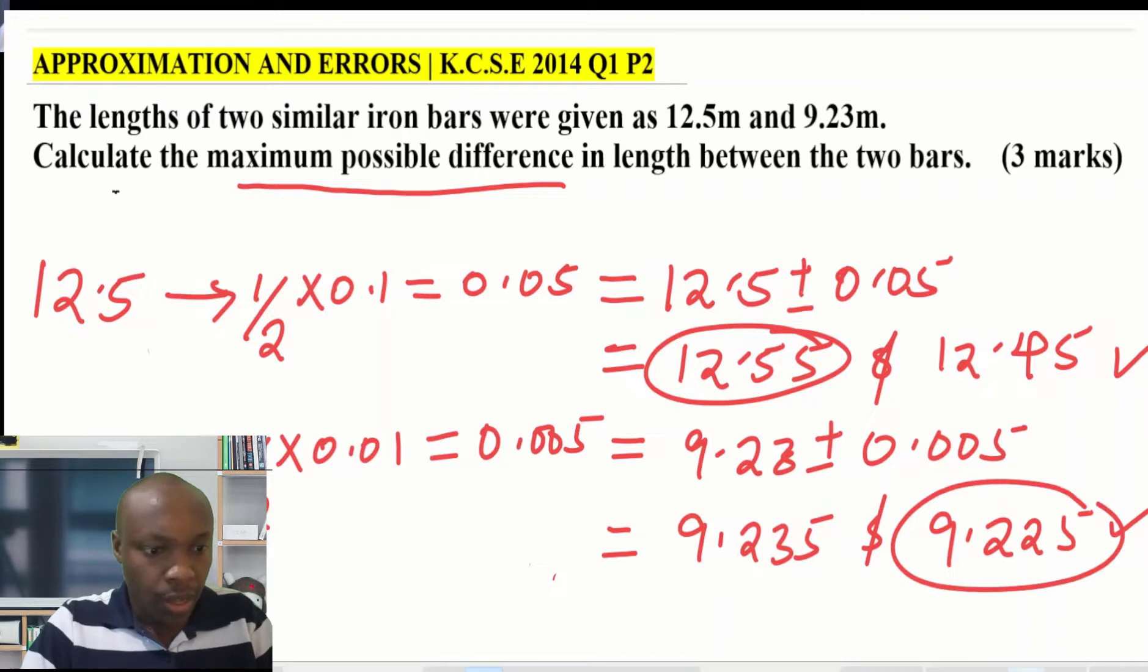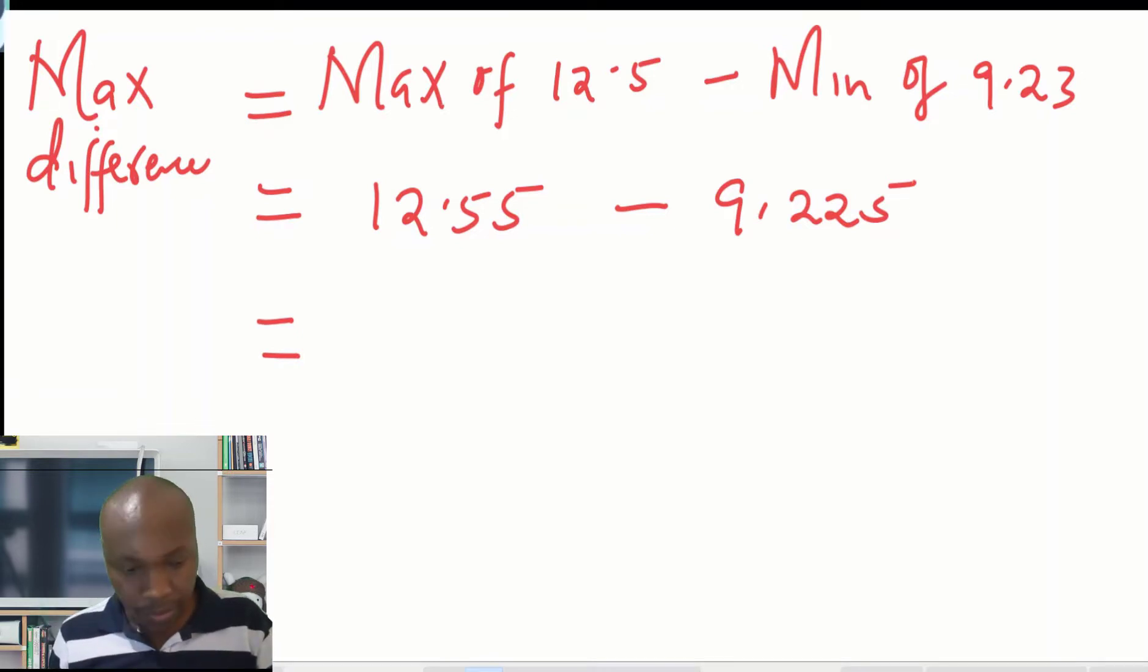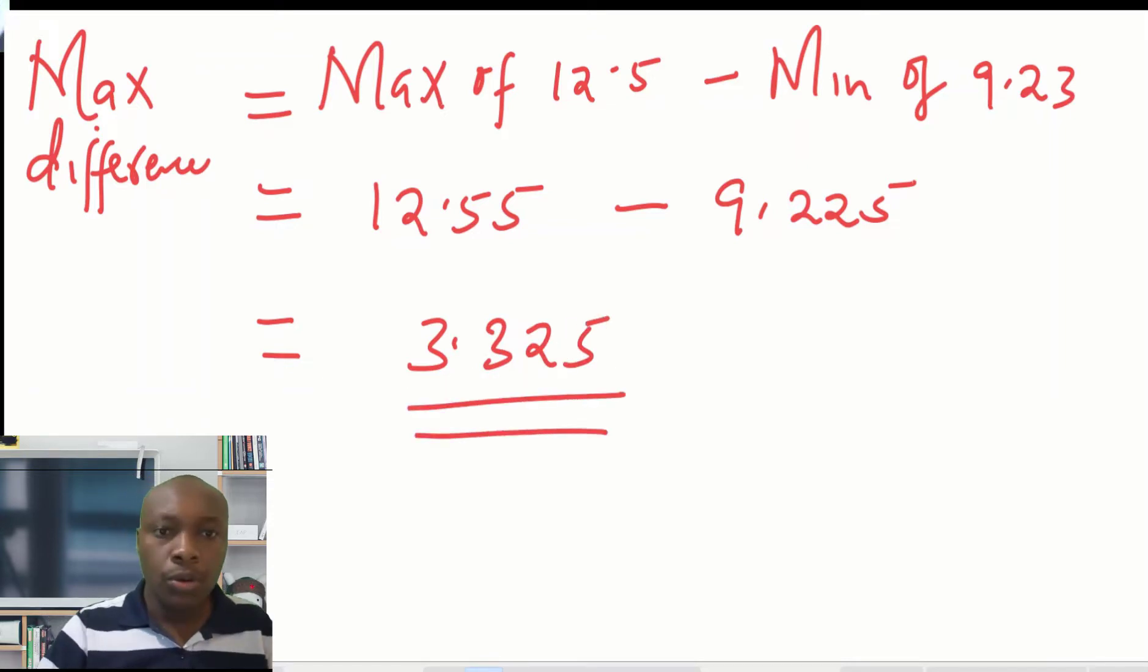The maximum of 12.5, which is here 12.55, then subtract the minimum of 9.23, which is this. So let us compute this. The maximum of 12.5 will be 12.55, then the minimum of 9.23 was 9.225. Therefore, the maximum possible difference: you subtract the two, 12.55 subtract 9.225. This gives 3.325. So that is the maximum possible difference.